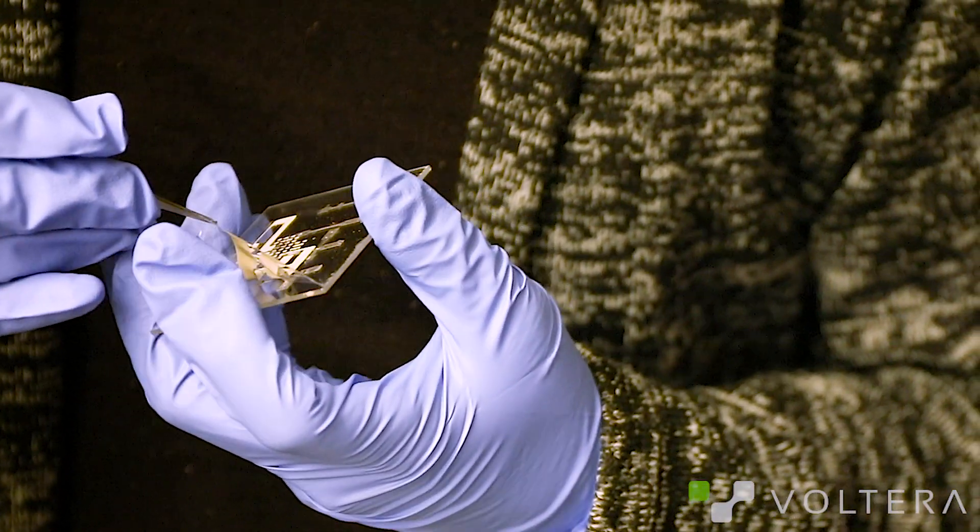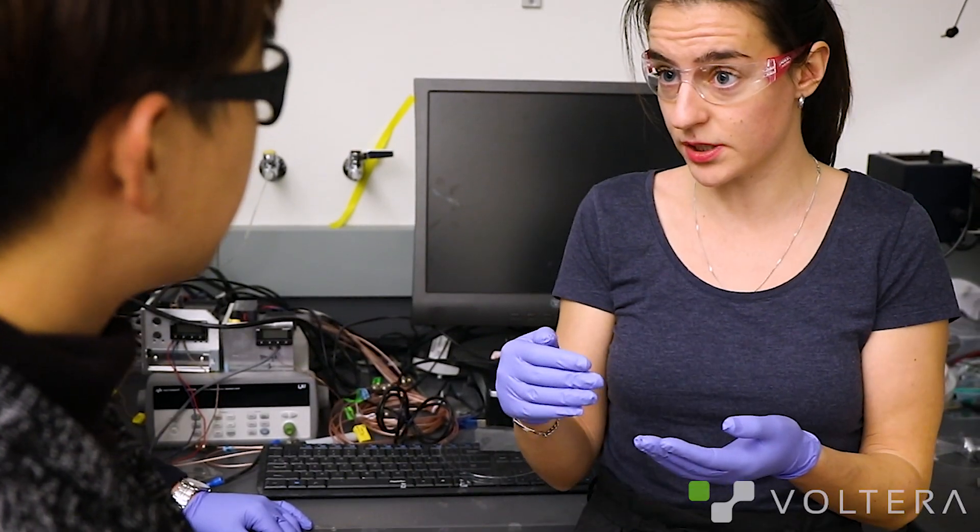My name is Jeming Kim and I'm working as a postdoctoral researcher in Zhenan Bao's lab. I'm currently working on fabricating robotic skin, which is stretchable.